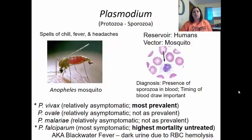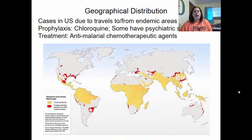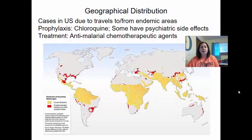There is a geographical distribution for malaria — cases in the US are due to travel to or from endemic areas, shown in a tan color on distribution maps. A prophylaxis called chloroquine can help prevent contracting this protozoa, however it does have psychiatric side effects for some individuals, including depression and hallucinations that can last years after use. If infected, treatment is an anti-malarial chemotherapeutic agent.